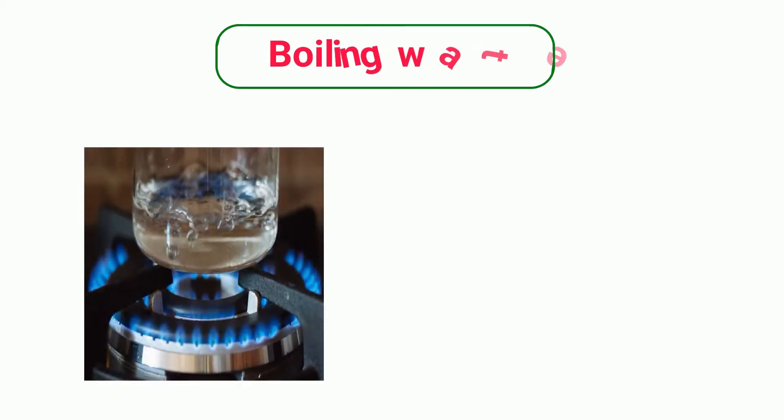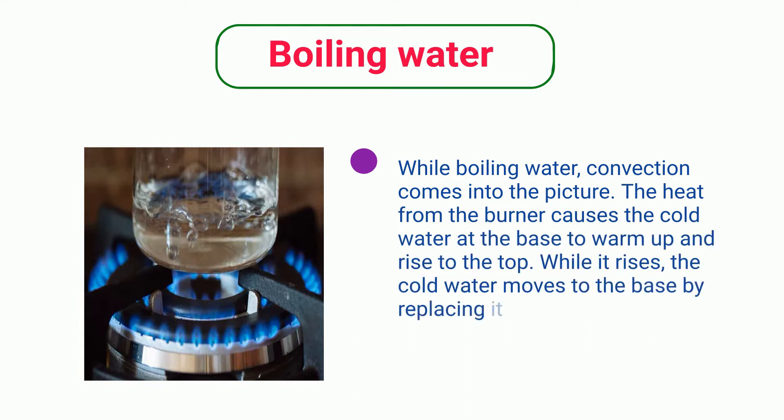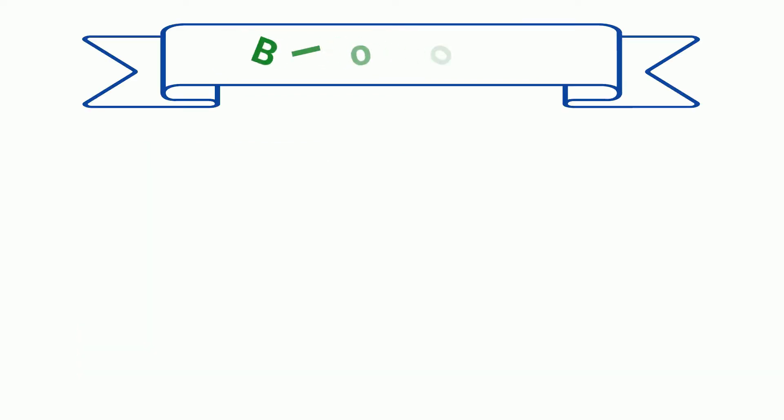Boiling water: While boiling water, convection comes into the picture. The heat from the burner causes the cold water at the base to warm up and rise to the top. While it rises, the cold water moves to the base by replacing it, resulting in a circular motion.